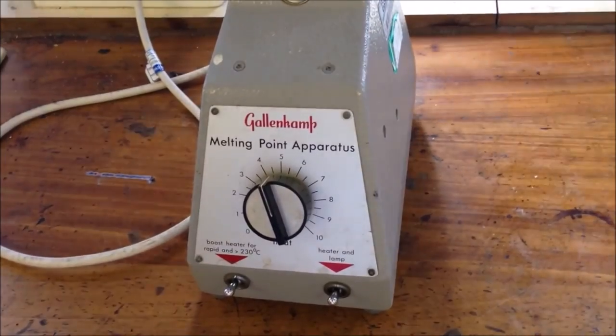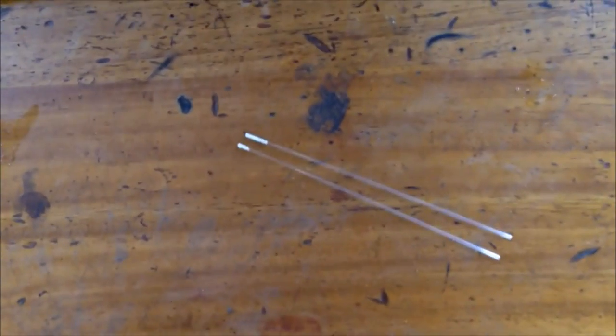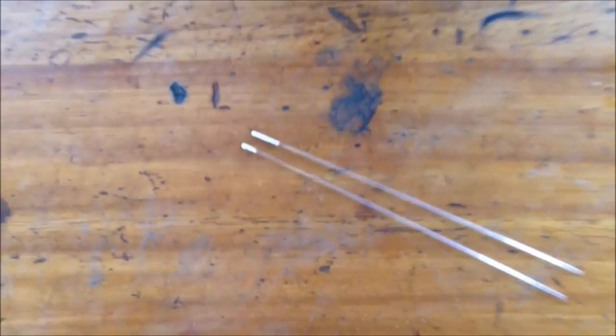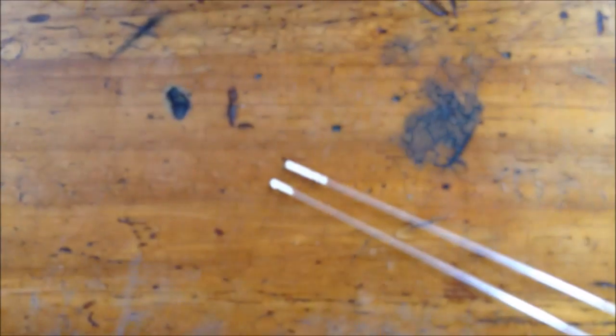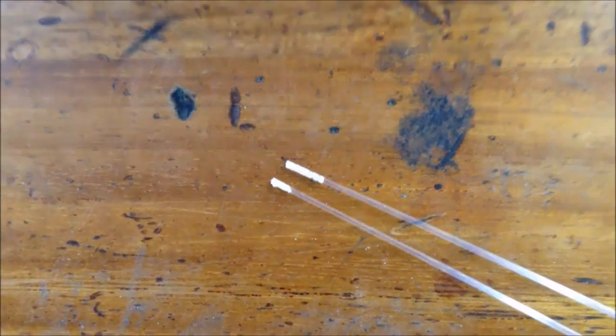So this is our rather ancient melting point apparatus. These are melting point tubes with a tiny bit of our solid that we just made in there.